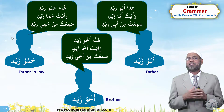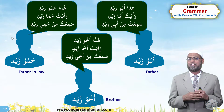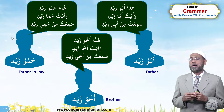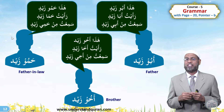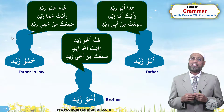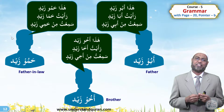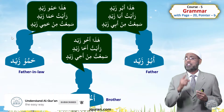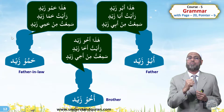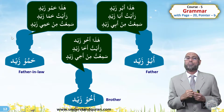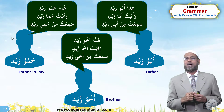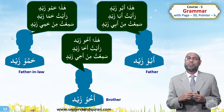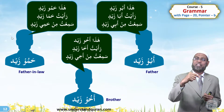Now let us use them in sentences. Hada Abu Zayd — this is Abu Zayd. Ra'aytu Aba Zayd — I saw Abu Zayd. Sam'atu min Abi Zayd — I heard from Abi Zayd. Answer: Hada Abu Zayd. Ra'aytu Aba Zayd. Sam'atu min Abi Zayd.